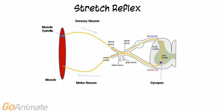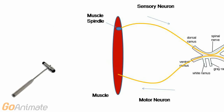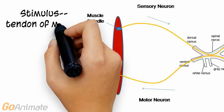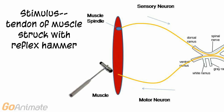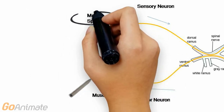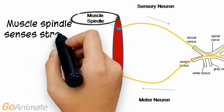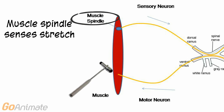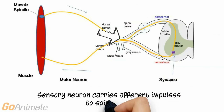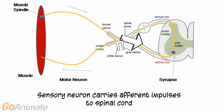The muscle's tendon is struck by a reflex hammer, causing the muscle to stretch. This stretch stimulus is sensed by a sensory receptor in the muscle called the muscle spindle. The muscle spindle then sends afferent impulses to the spinal cord via a sensory neuron.